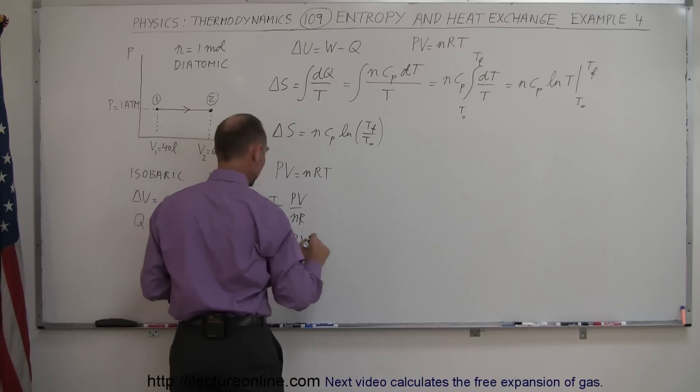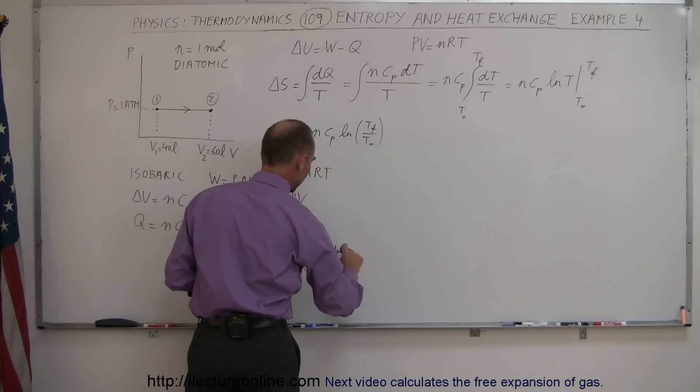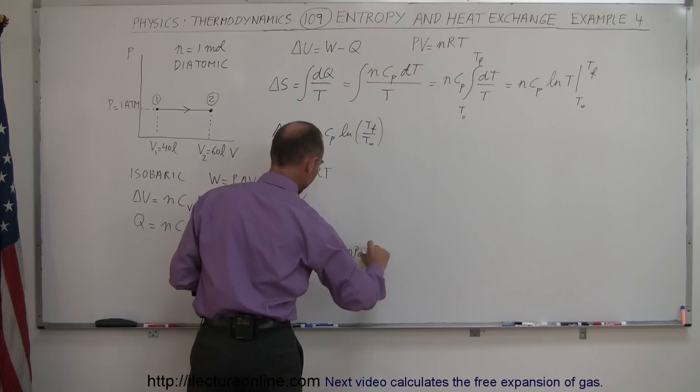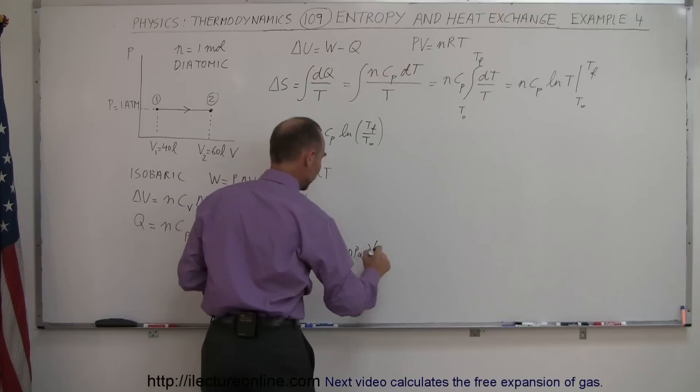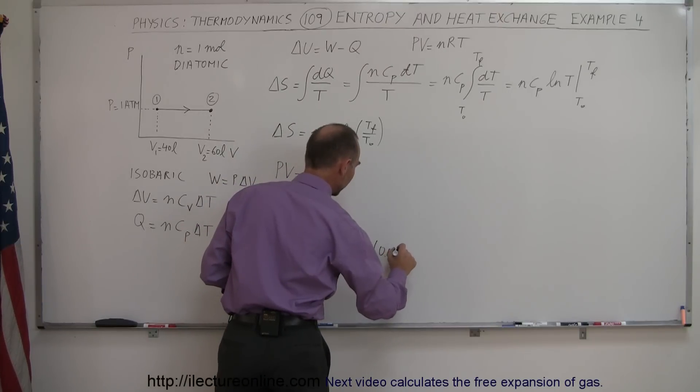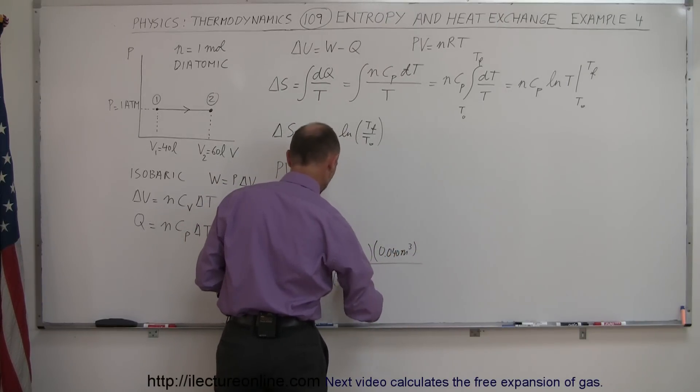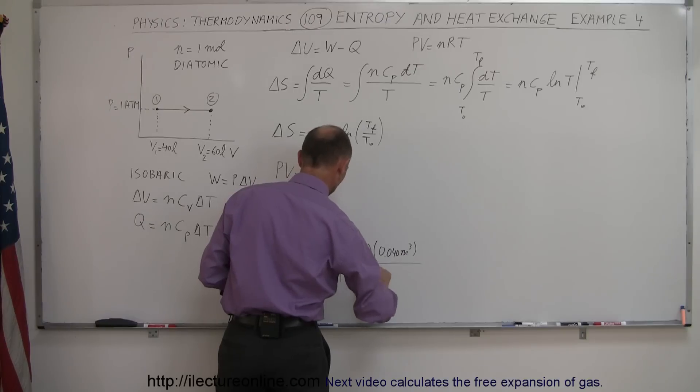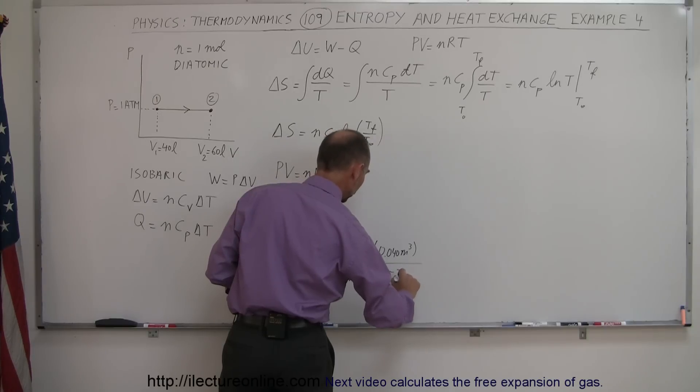The pressure at that point is one atmosphere, which is 101,300 pascals. The volume is 40 liters converted to cubic meters, is 0.040 meters cubed, divided by N, which is one mole, and R, which is 8.315 joules per mole times Kelvin.